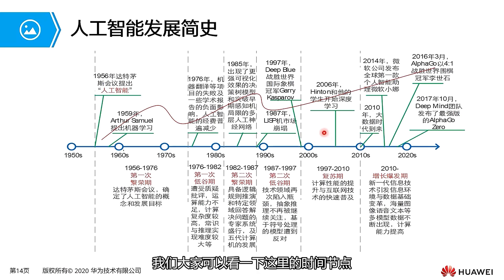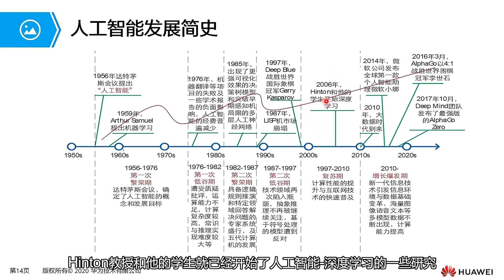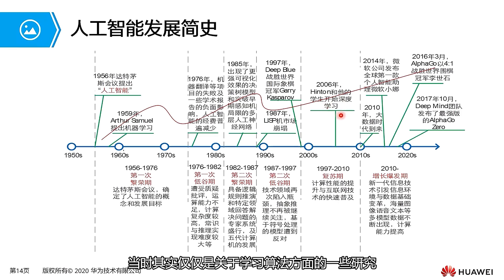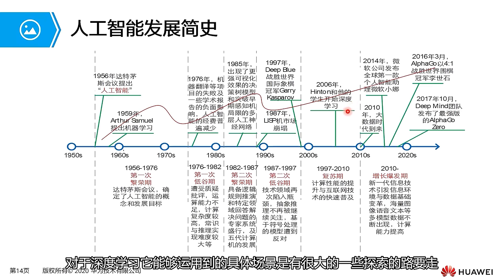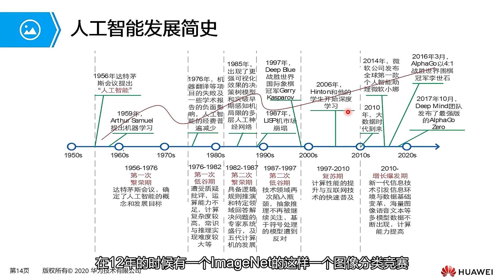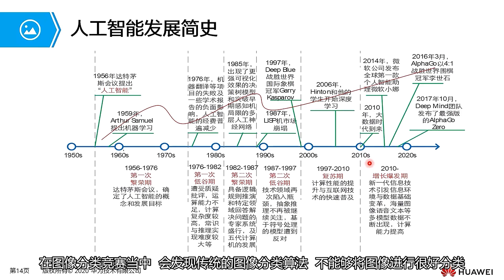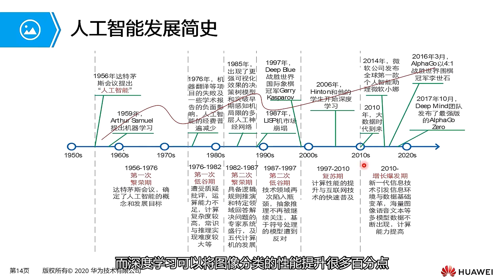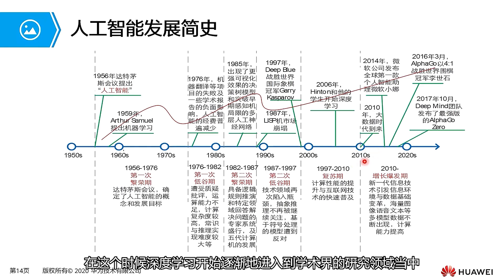Looking at the timeline: in 2006, Professor Hinton and his students began research on deep learning — specifically on learning algorithms, with the application path still being explored. In 2012, in the ImageNet image classification competition, traditional image classification algorithms were found unable to classify images well. Deep learning improved image classification performance by many percentage points, and deep learning gradually entered the academic research field.